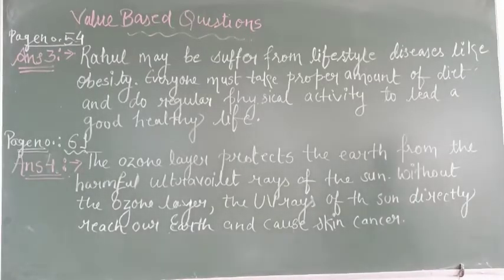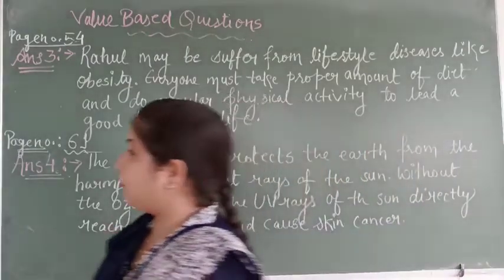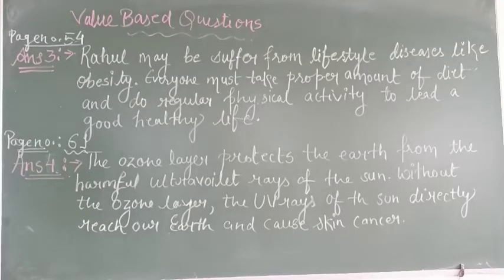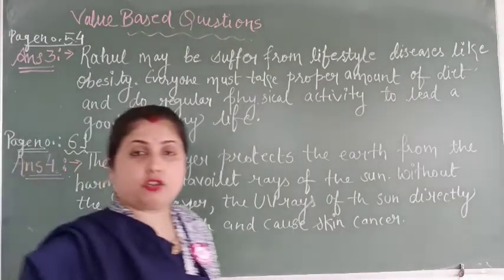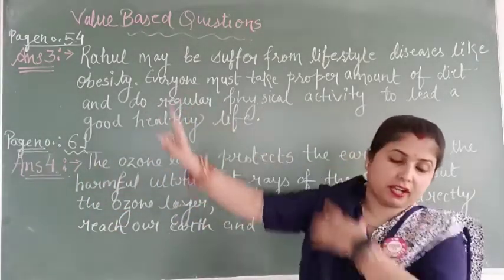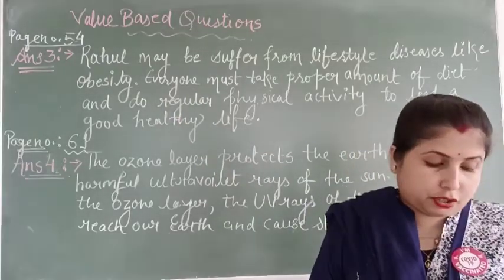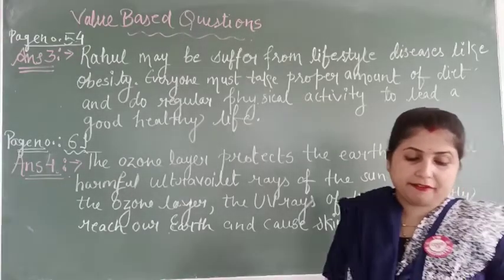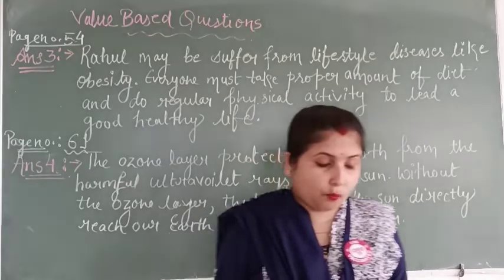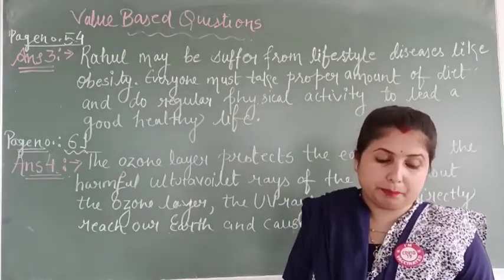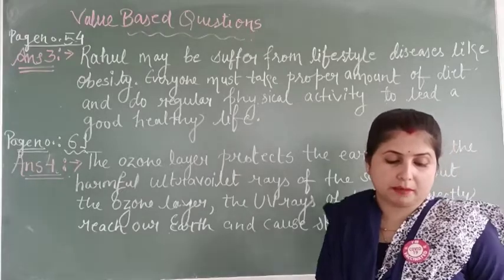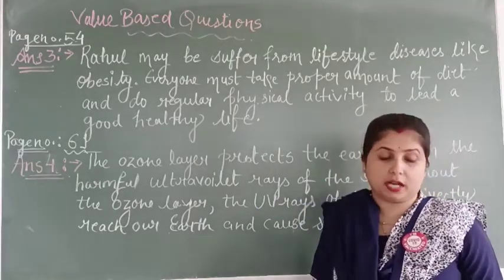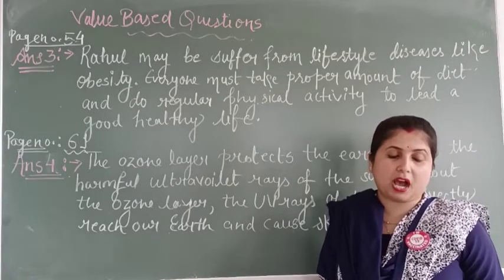Let's go to the next question. Open chapter number 5 — Disease and AIDS Prevention. The question is given on page number 54. The question is: 'Ravan plays video games every day after coming home from school. While playing, he loves to have pizza, burger, and cold drinks. His mother asks him to go out and play with his friends. He doesn't listen to her. What problems could this daily routine of Rahul lead to?'